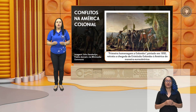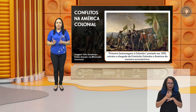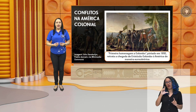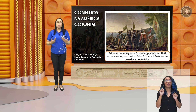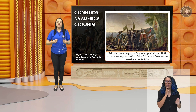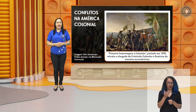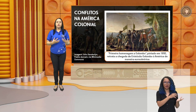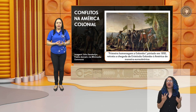Nesta aula vamos verificar conflitos na América Colonial. Que América Colonial era essa? Observem aqui na nossa imagem que nós temos a primeira homenagem a Colombo. Esta imagem representa a visão eurocêntrica, a visão do europeu em relação a essa conquista ao território recém-encontrado, ao Novo Mundo. A chegada dos europeus trouxe muitos conflitos para a América, mas já havia presença de conflitos entre os próprios indígenas por causa da diversidade cultural.